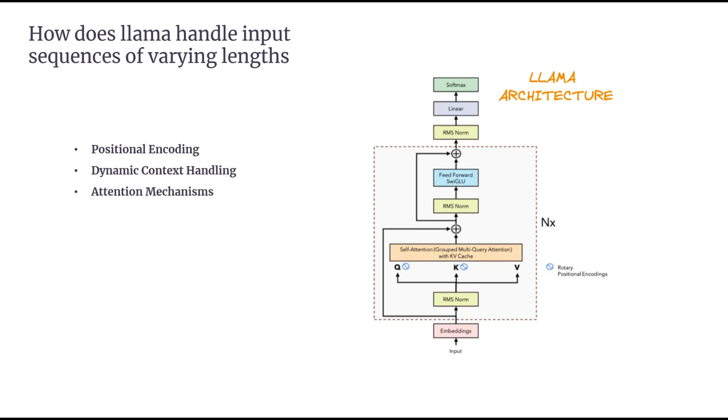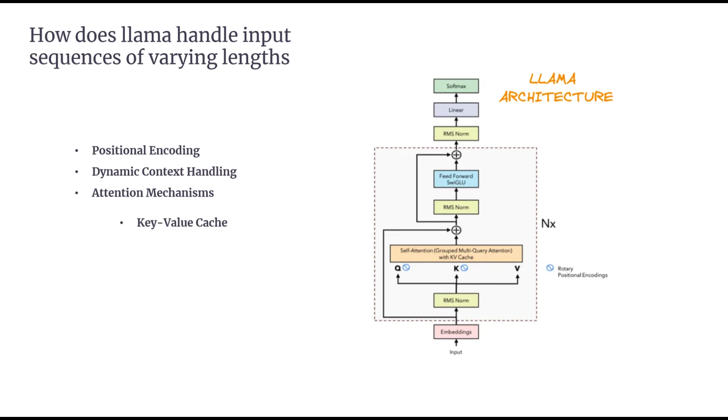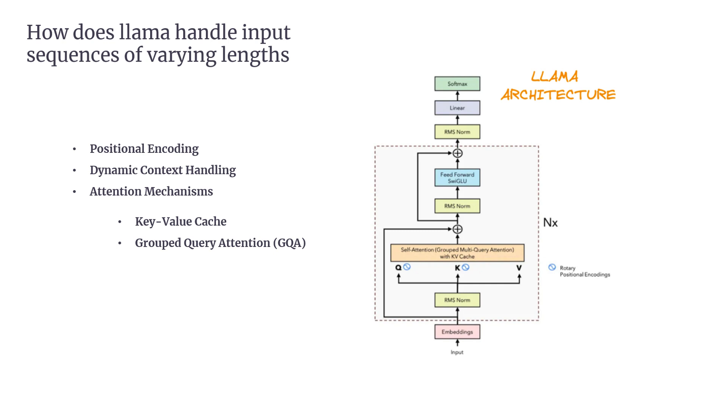The third, Attention Mechanisms. LLAMA has several optimizations in how it handles attention, which is crucial for long sequences. First, Key Value Cache. LLAMA implements a key value cache to speed up inference. Only the key and value vectors are cached, and the query vector is updated with each new token. By caching the keys and values, LLAMA avoids recalculating them for every token, reducing redundancy and speeding up inference, particularly for longer sequences. Second, Grouped Query Attention. In this approach, queries are grouped together and each group shares a single set of keys and values. This method strikes a balance between efficiency and quality, which is especially important when working with long sequences.